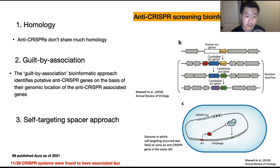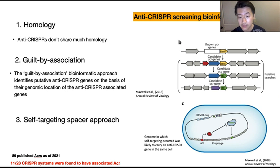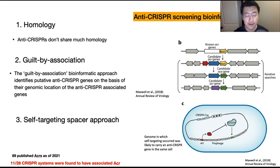The guilt-by-association bioinformatic approach identifies putative anti-CRISPR genes on the basis of their genomic location rather than sequence similarity. It usually tries to locate genes upstream of anti-CRISPR-associated genes, which are more conserved and are very abundantly found to be associated with anti-CRISPR genes.